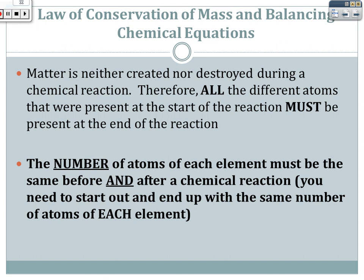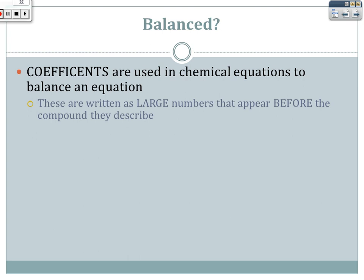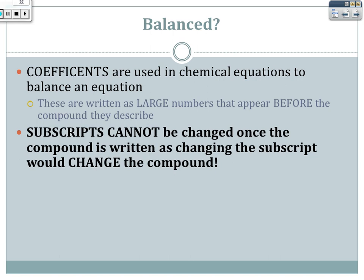Balancing coefficients are used in chemical equations. Coefficients are the large numbers that appear before a compound. We're not talking about subscripts, which are the small numbers after or in between elements in a compound. Subscripts cannot be changed once the compound is written, because changing a subscript changes the compound. For example, H2O and H3O are two totally different substances.